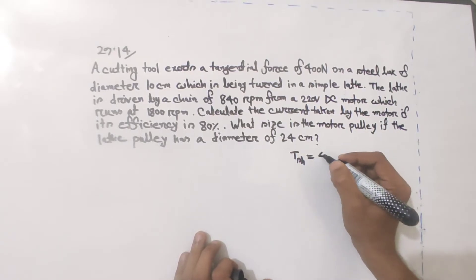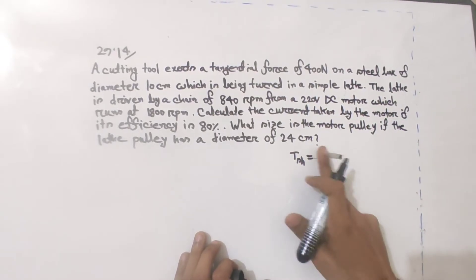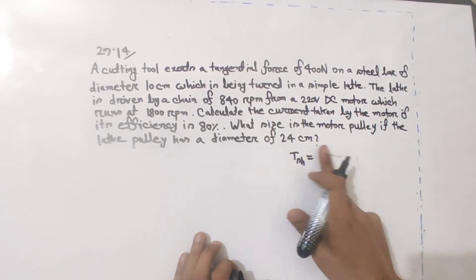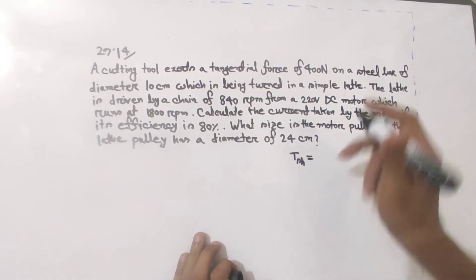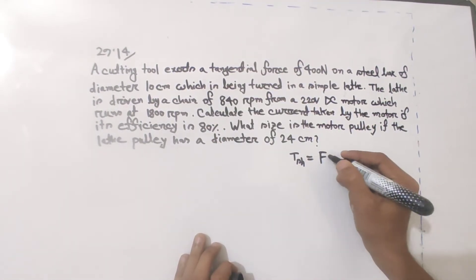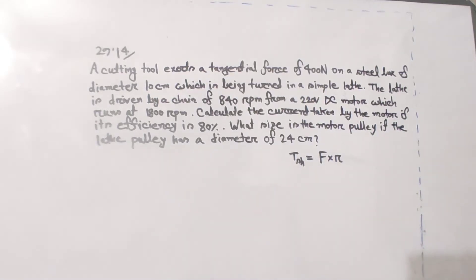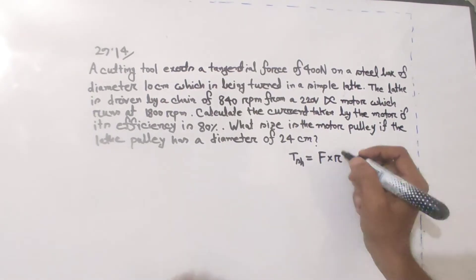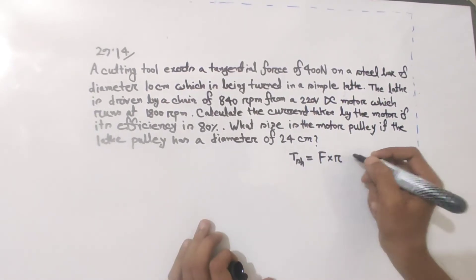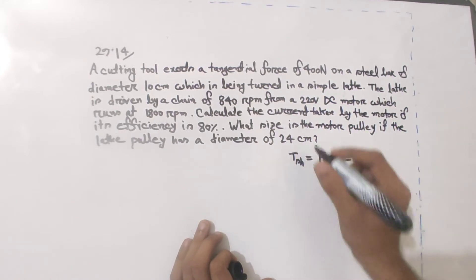The basic formula is: torque equals force into radius. The formula is torque equals force into radius — since we have diameter, we take radius as diameter divided by two. So using the basic formula, with 400 newton and diameter given.